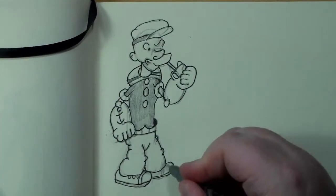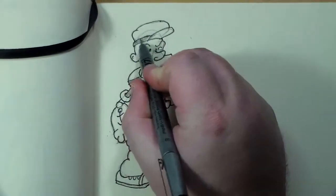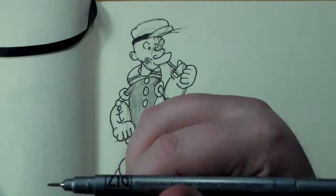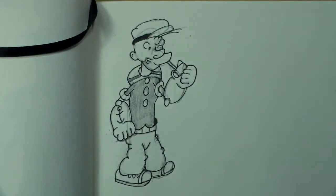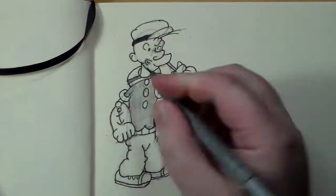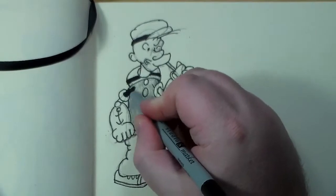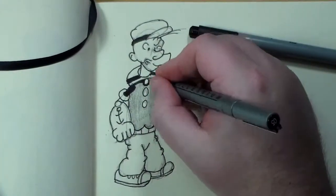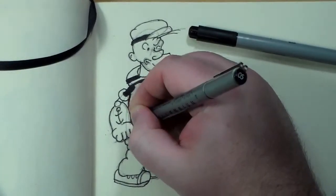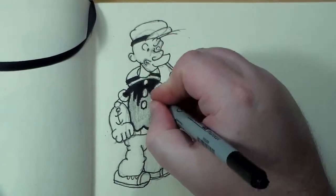Here I'm going back in and inking. I have a Zig Millennium scrapbooking pen—it was two or three dollars from Walmart. The ink doesn't go on as easily as a Micron, but it's basically the same thing. At that point I started using a brush pen, which is also just a scrapbooking pen.